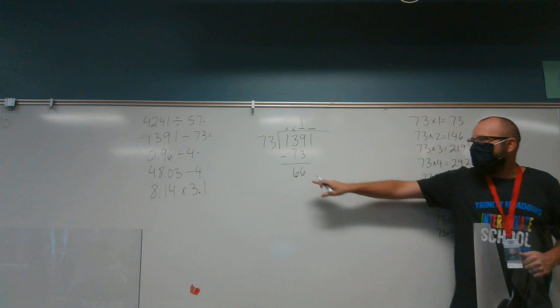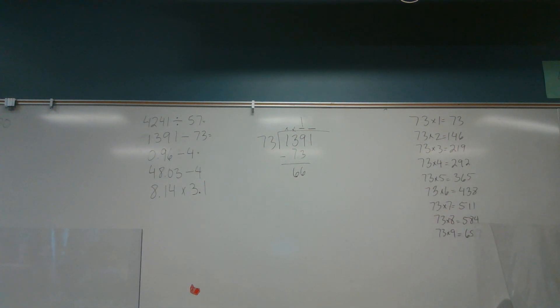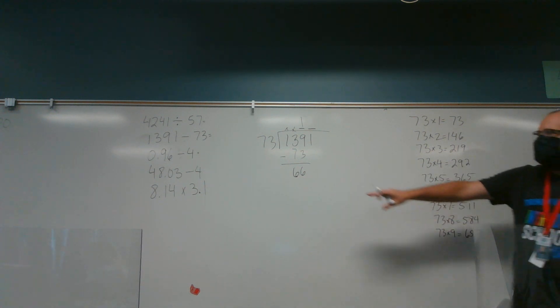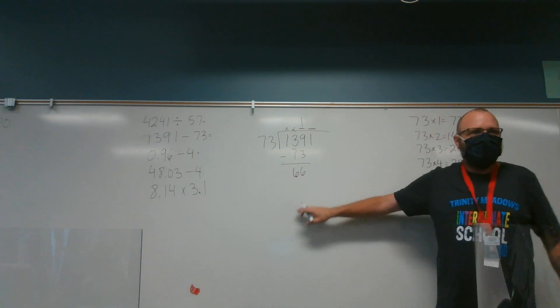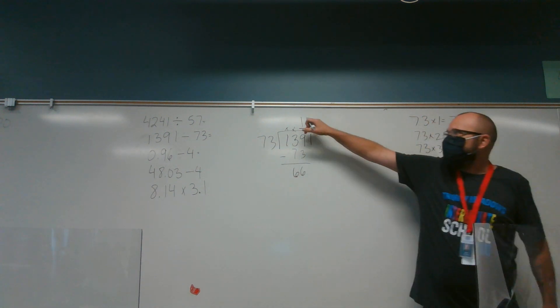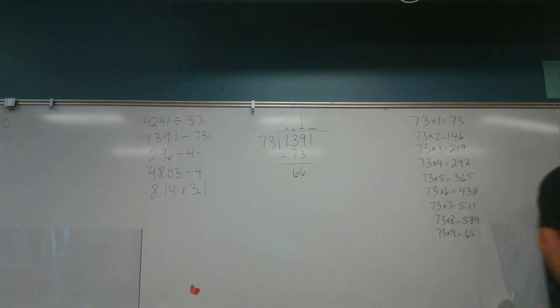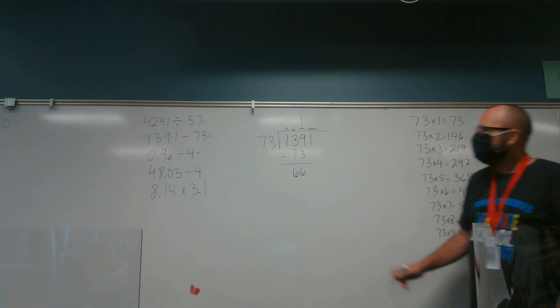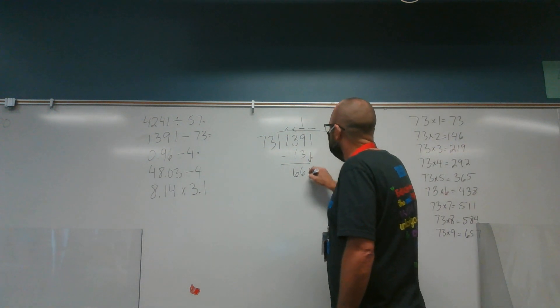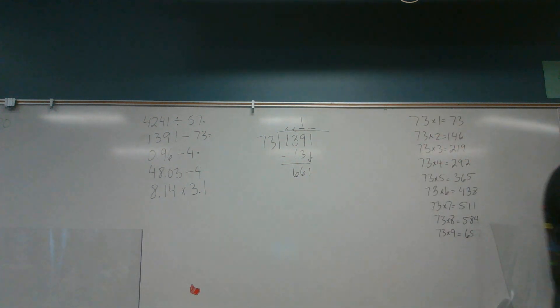And when I subtract, I always want it to be less than my divisor. So if I got a number bigger than 73 here, I've done something wrong. Either this number's wrong or my subtraction is wrong. Then I bring down my 1, which is why the next number goes directly above the 1. Putting the numbers in your quotient exactly where they go is very important, especially as you get to decimals, because it'll mess you up if you don't.